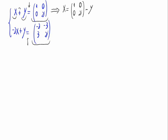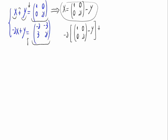Now, let's substitute this into the second equation. We'll have minus 2 times x — that is what we've written above — plus y, equals the matrix: minus 2, minus 3, 3, 2.